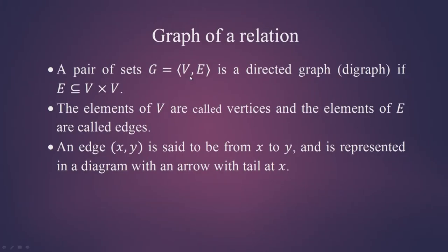We will be discussing the graph of a relation. First, let us see what is a graph. If we have a pair of sets G = (V, E) where V and E are two sets, we call it a directed graph or in short a digraph if the set E is a subset of V cross V. The elements of V are called vertices and the elements of E are called edges.